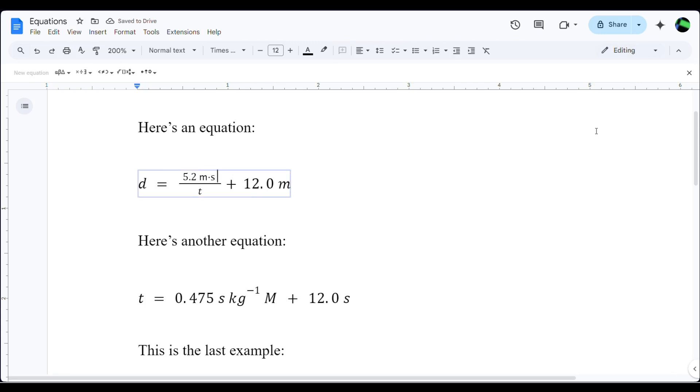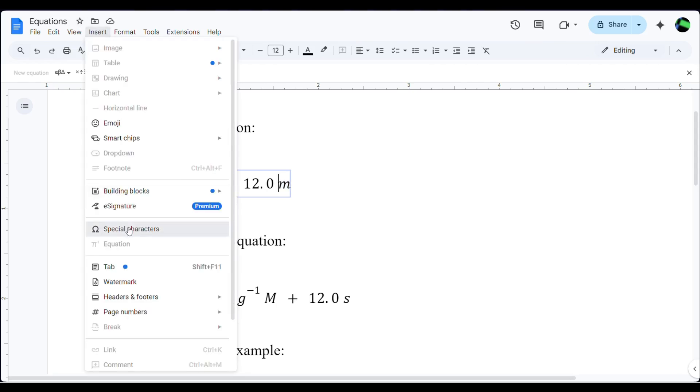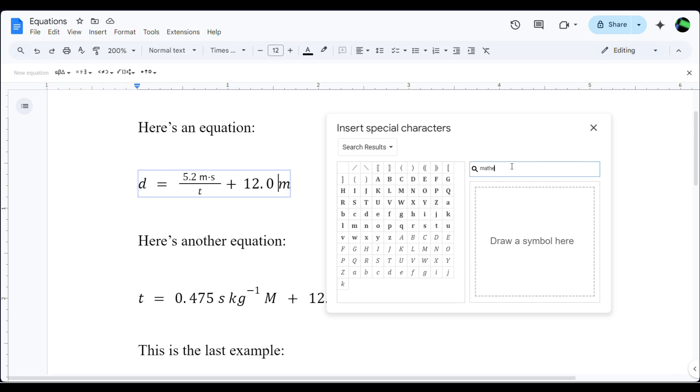I'm going to leave that T alone because it represents time. But this M represents meters, so I need to replace it with a non-italicized M. Again, Special Characters, search by keyword, mathematical sans M.